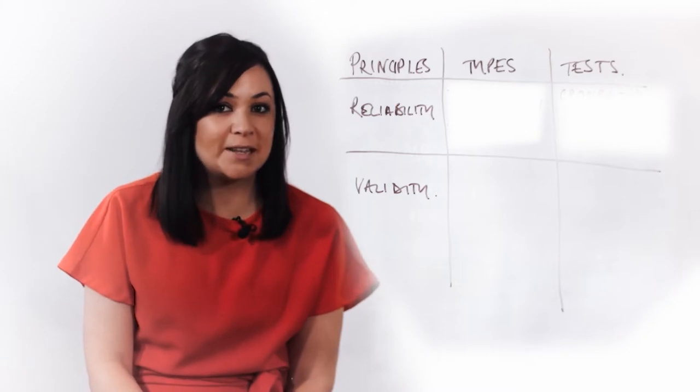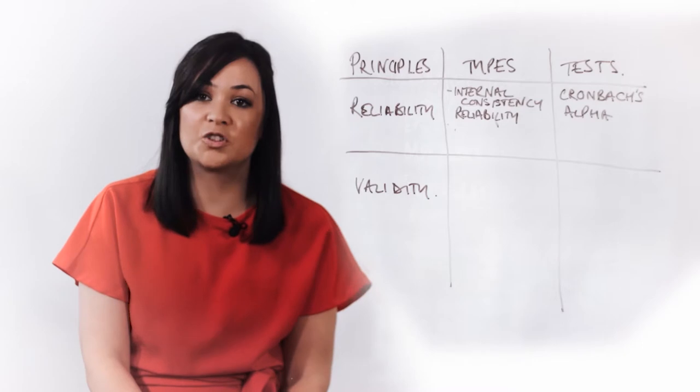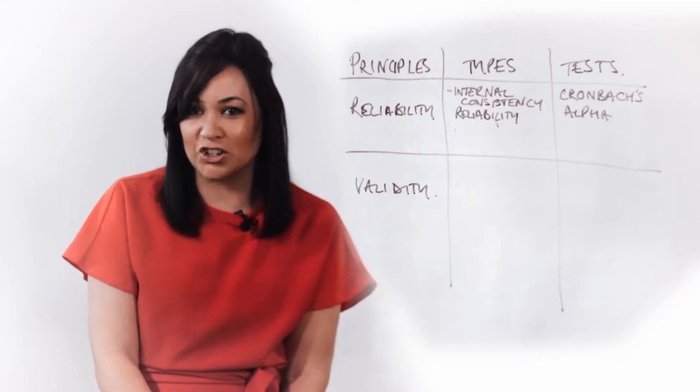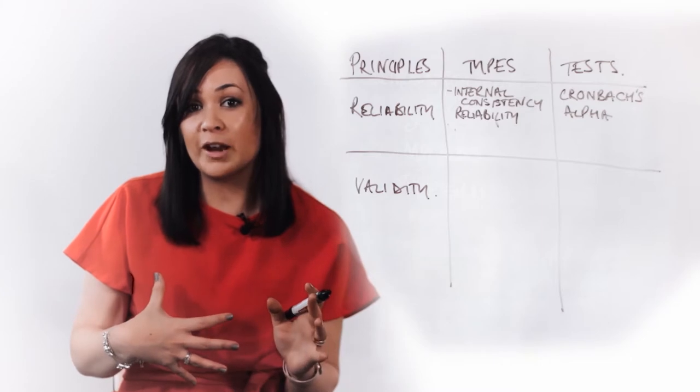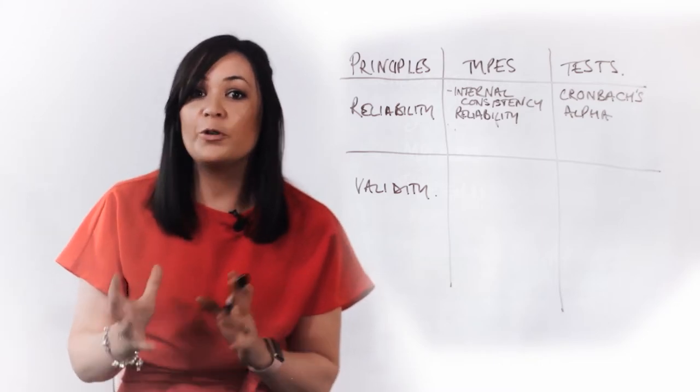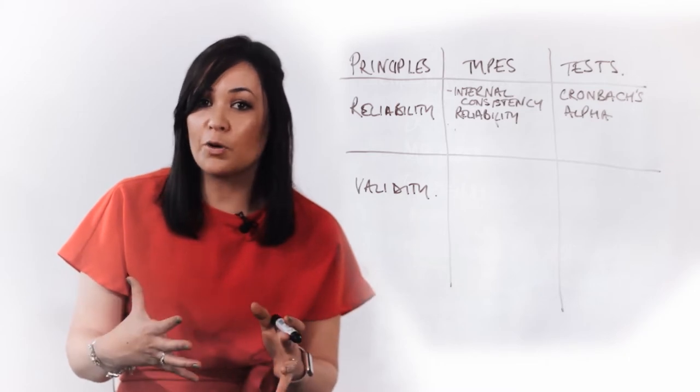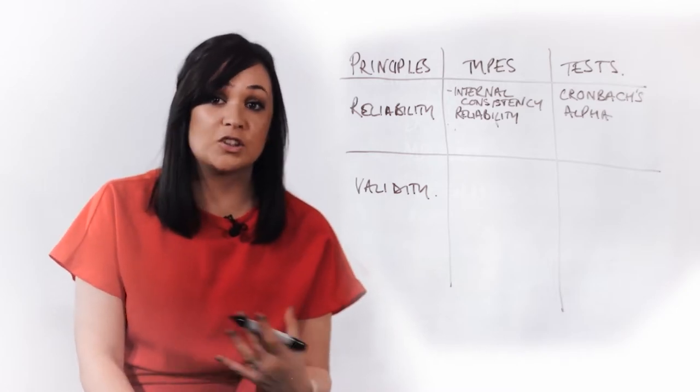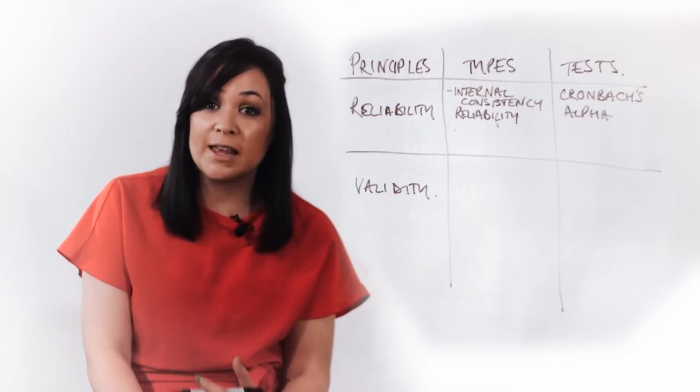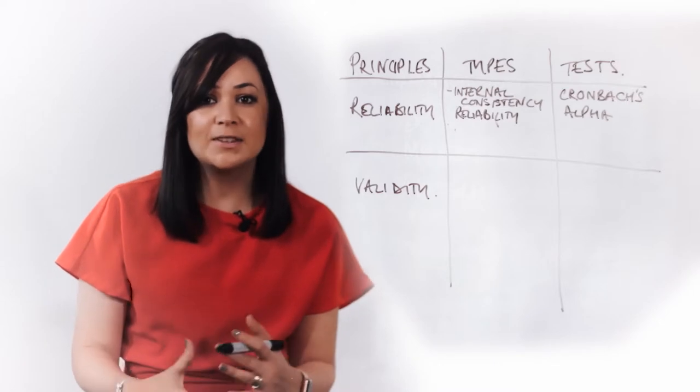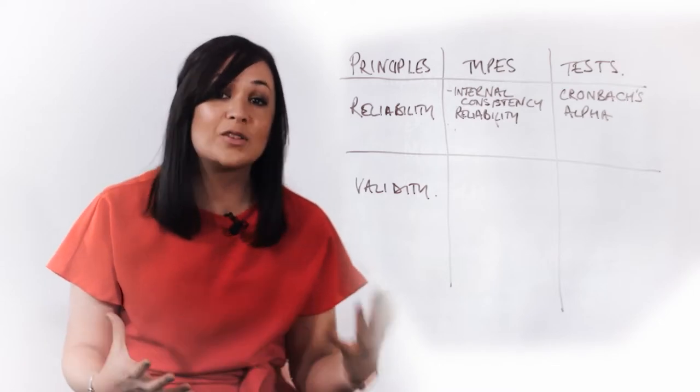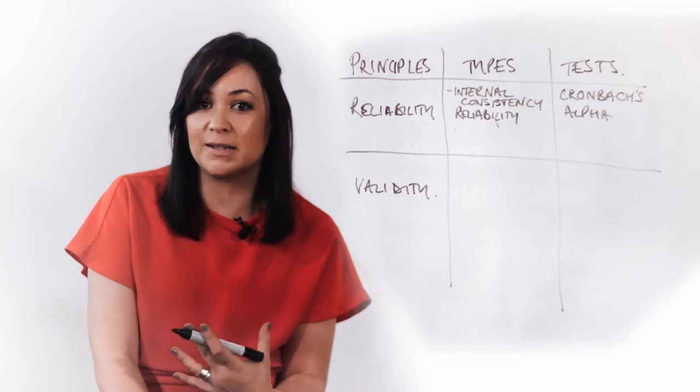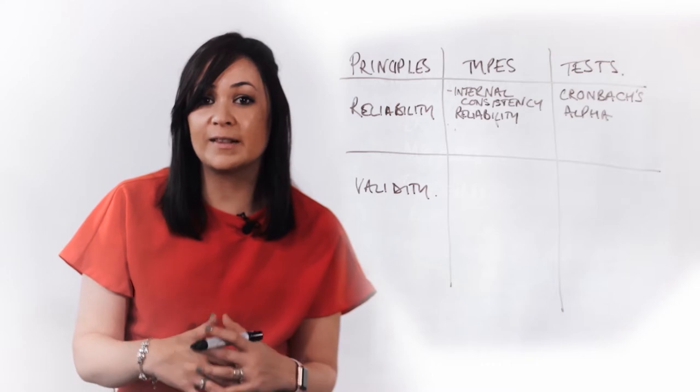Internal consistency reliability measures how consistent are the results across an entire instrument or across predefined sections of that instrument. It's usually the case that instruments have more than one section. As such, the full instrument measuring one variable and portions of it measuring its several domains or subscales. For example, a job satisfaction survey might comprise 40 survey questions. Questions 1 through 8 could be designed to measure work-life balance. Questions 9 through 16 could aim at measuring satisfaction with interaction with co-workers. Items 17 through 24 could measure praise and recognition and so forth. In this example, these subscales would be said to show internal consistency reliability if all items within each scale tend to move along in the same direction as the others.